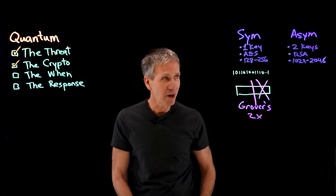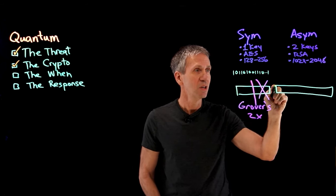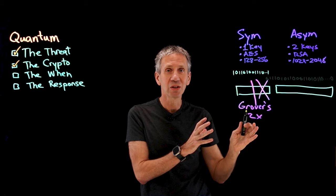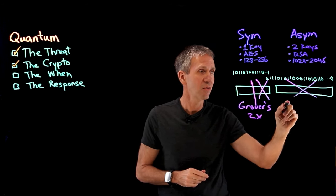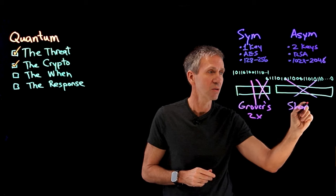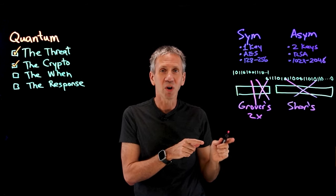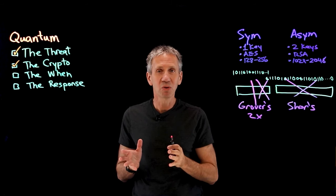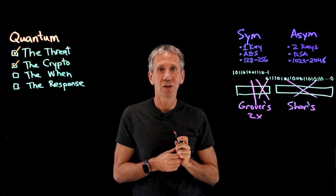The thing we're much more worried about is in these cases with asymmetric algorithms. Even though we have really long keys, it turns out that these things fall like a house of cards against a thing known as Shor's algorithm. Shor's algorithm is optimized for a quantum computer. A traditional computer can't do nearly as much with that. So with Shor's, the whole thing falls.